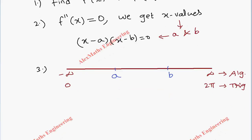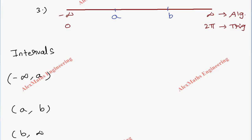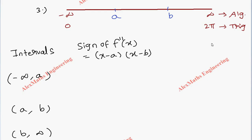Now we have three intervals. We make a tabular column in which we first write the intervals: the first interval is minus infinity to a, then a to b, then b to infinity. In the next column we find the sign of f''(x) by checking the factors (x minus a)(x minus b). The last column will show the nature — whether it is concave up or concave down. In each interval we take one value: x1, x2, and x3 respectively.